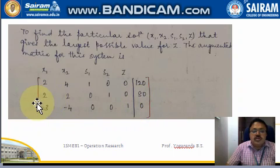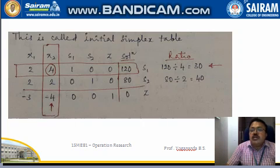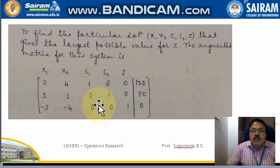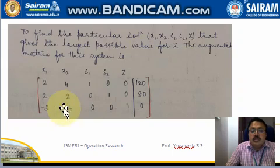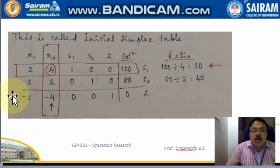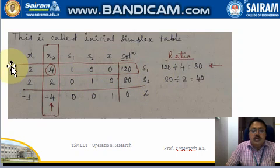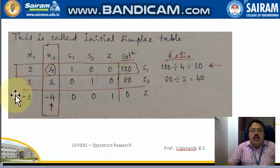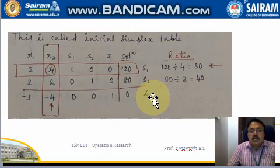The last row represents my objective function row. Now the initial simplex table is written with columns x1, x2, s1, s2, and z. The three rows are written — the first two are constraints and the third is the objective function row — with their solution values. The first constraint has slack variable s1, the second has s2, and the objective function row contains z.